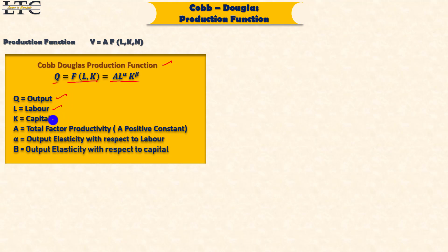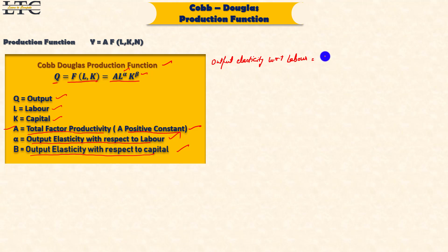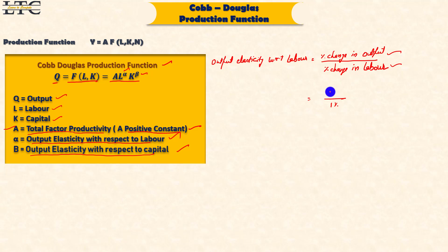In the Cobb-Douglas production function, Q is equal to A times L^alpha times K^beta. Here A is total factor productivity, which is a positive constant. Alpha is output elasticity with respect to labor, and beta is output elasticity with respect to capital. Output elasticity with respect to labor means: if labor changes by 1%, what percentage change happens in output? If alpha is 0.45, then a 1% change in labor leads to a 0.45% change in output.